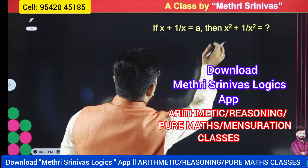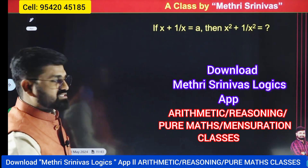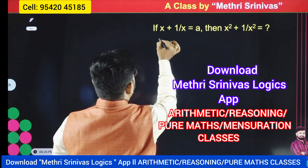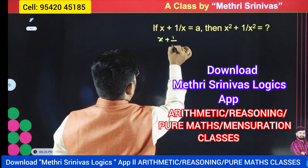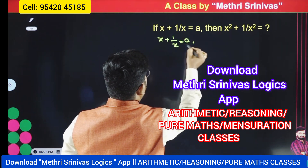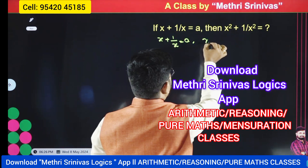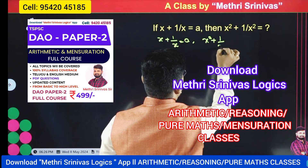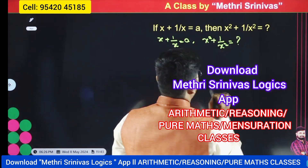Generally, if x plus 1 by x is equal to a, I am going to write the number of x squared plus 1 by x squared. So what they are given? x plus 1 by x is equal to a, they are given.